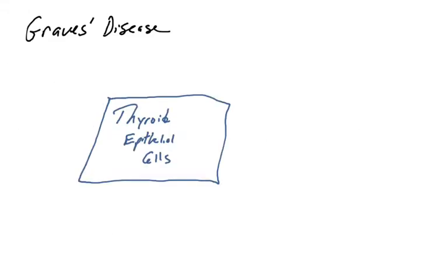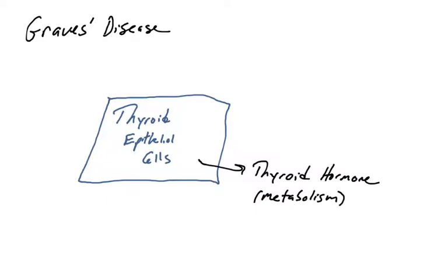The first autoimmune disorder we're going to talk about is Graves' disease, which involves the thyroid gland. I've drawn a thyroid epithelial cell, and hopefully you recall that the thyroid makes a hormone called thyroid hormone, sometimes referred to as T3 or T4. This hormone is secreted into the bloodstream and affects cells all over the body — it has many target cells and is involved in regulating metabolism.